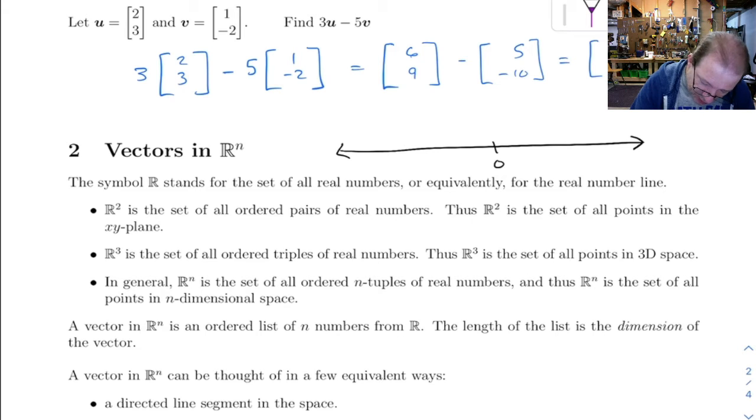So you can think of this as being a one-dimensional space, and the vectors would either point in the positive direction to some real number, or they could point in the negative direction to some real number.